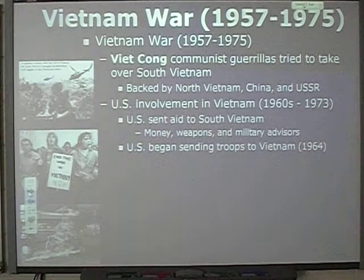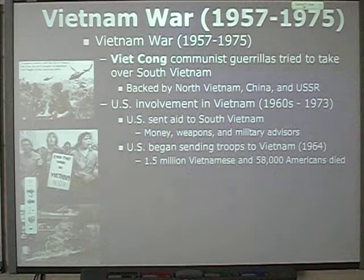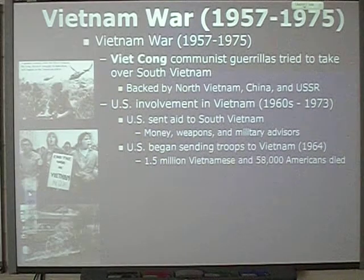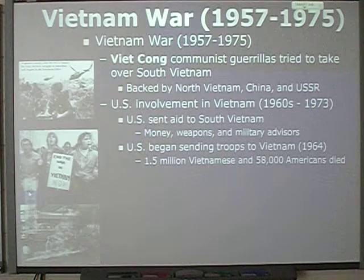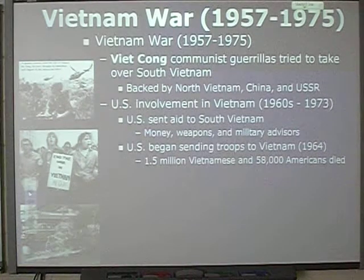The U.S. began sending troops in 1964 to Vietnam. Unfortunately, because we sent as many troops as we did, there were 1.5 million Vietnamese killed and 58,000 American soldiers. We went to D.C. on a field trip and one of the things we got to visit was the Wall — every name of every person that died as a result of Vietnam in the U.S. military.